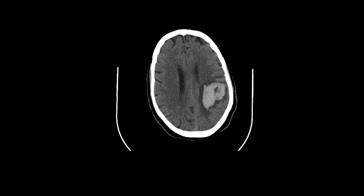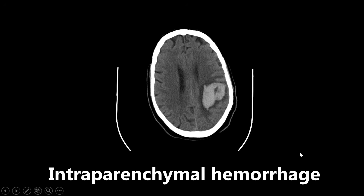This is an example of an intraparenchymal hemorrhage. This usually occurs due to systemic hypertension, and it's important to know where it occurs in the brain — usually in the basal ganglia and the internal capsule. A lot of medical students are used to identifying subdural or epidural hematomas, and seeing something like this they might think it's a mass. Don't be tripped up — there's no midline shift here. It is an intraparenchymal hemorrhage.